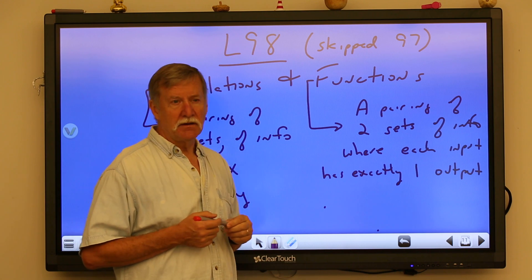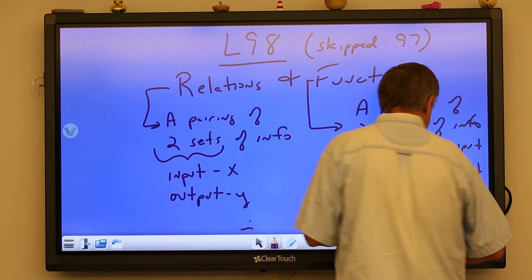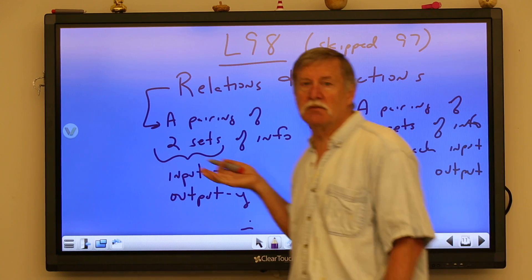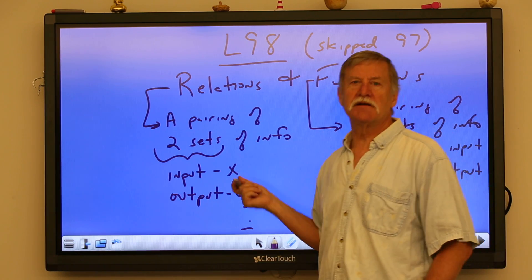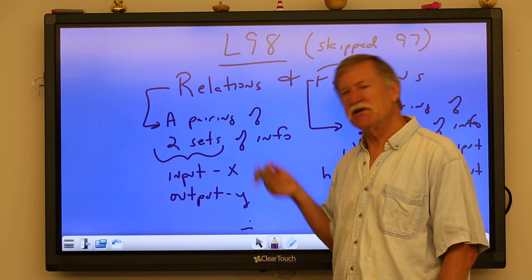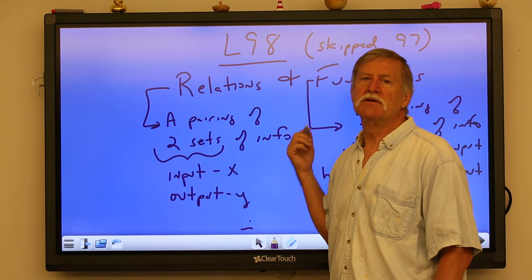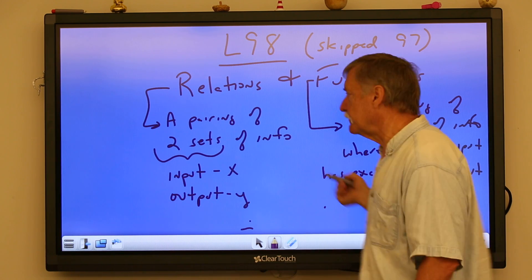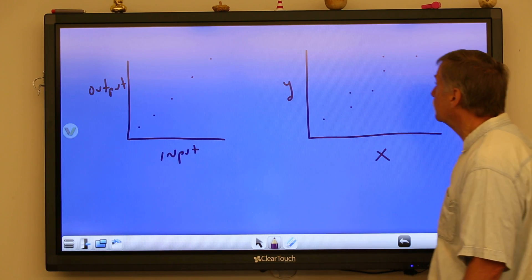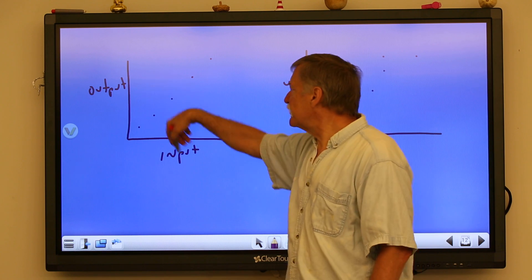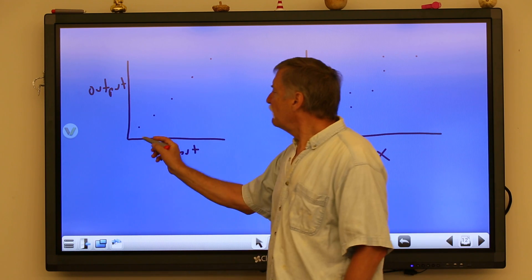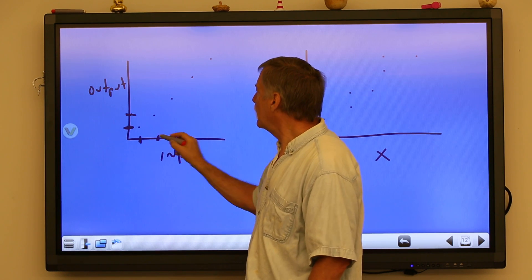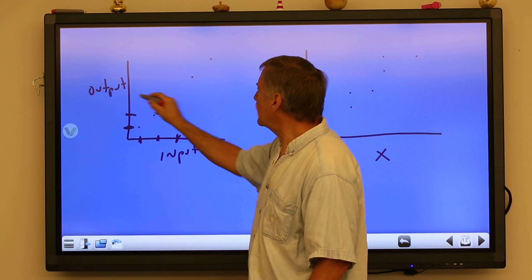There are ways to determine whether something's a function or a relation, which is the whole point of this lesson. It's basically a yes or no question: do these two sets of information show a functional relationship? So we've got some inputs and outputs — if I have an input here I get an output there, and another input gives another output.